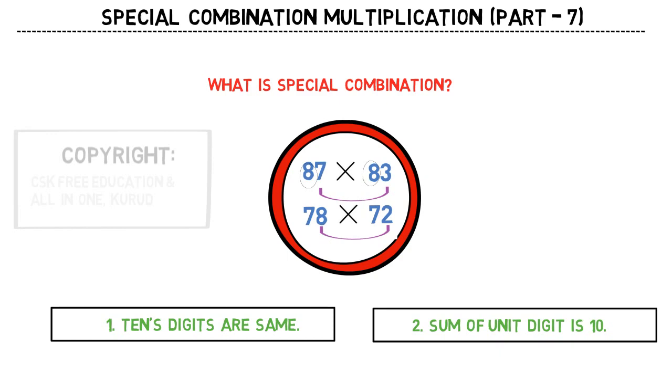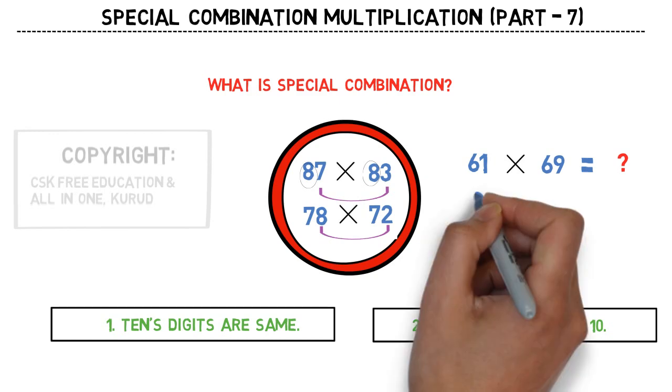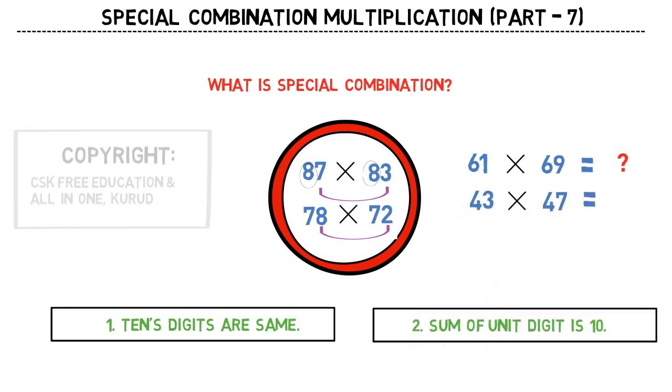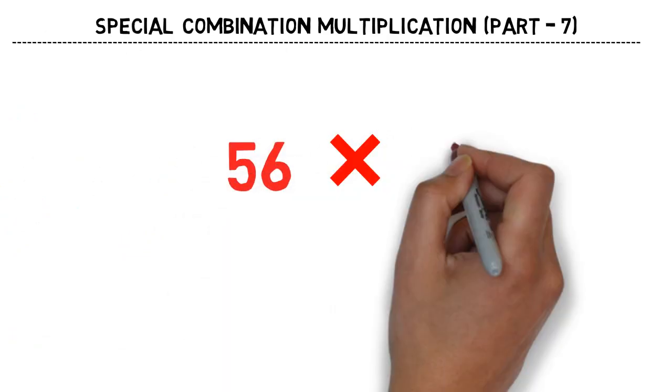Now let me write down a few more questions to solve: 61 into 69, 43 into 47, 56 into 54. Now let's try to solve one question out of it. Let's say 56 into 54. This is a two-step process.